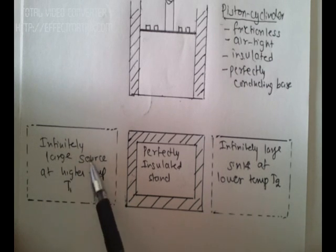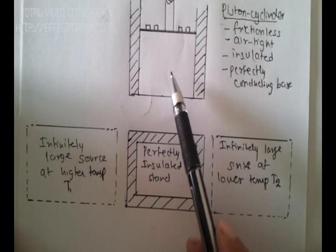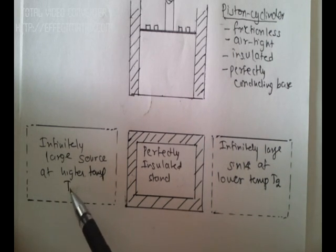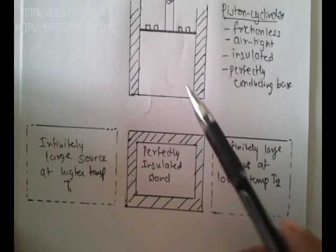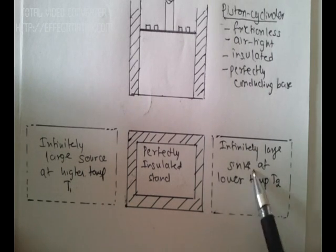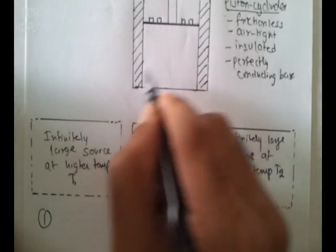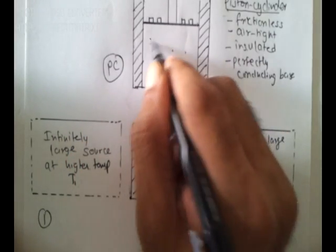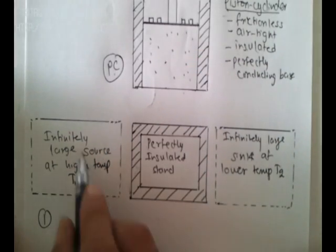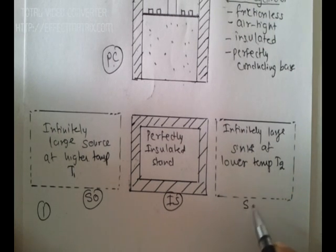The reason why he proposed an infinitely large source at higher temperature T1 is that it can maintain the temperature of the gas inside the cylinder at the same value. Supposing the temperature is 70 degrees Celsius, when you bring it in contact with an infinitely large source at the same temperature, the temperature will be maintained even if expansion of the gas is happening. We will call the piston cylinder arrangement PC, the infinitely large source SO, the insulating stand IS, and the sink SI.